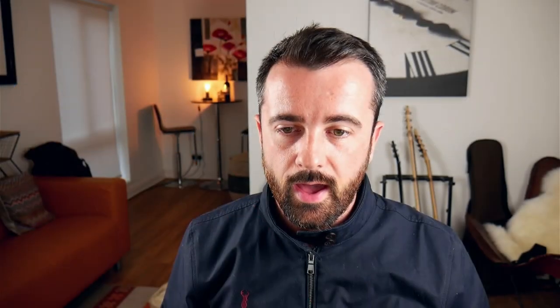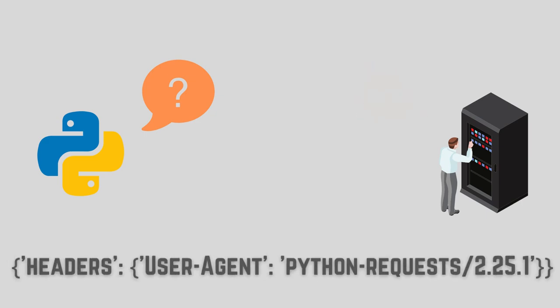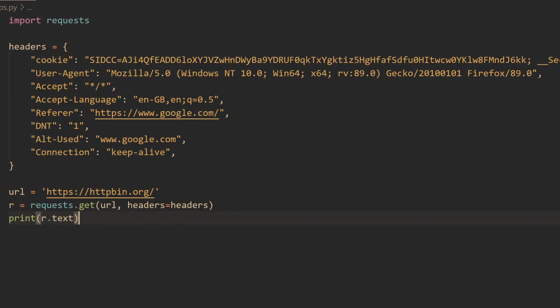Our HTTP requests all come with a header, which provides the server with some information so it can formulate a response. Using our code we can specify which headers we want to send, or more importantly, change them to make the server believe something we want it to believe. The most common header you'll want to change is the user agent — this tells the server about the client making the request. We can change it to tell the website we are a common browser on a normal operating system rather than code, helping avoid low-level blocking, since by default Python requests identifies itself as such, giving sites a simple way to block us. Headers are sent as a dictionary along with the request.